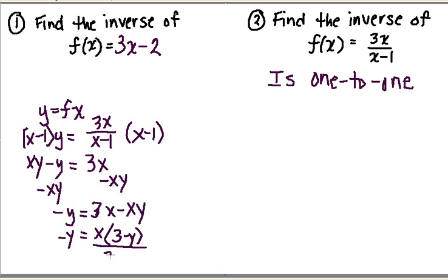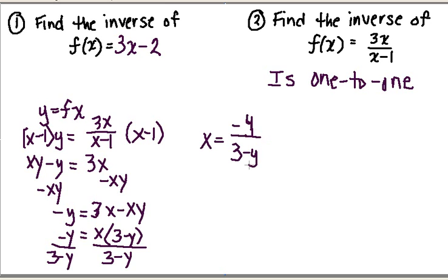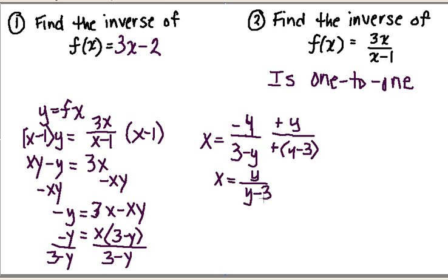And now for my last step, I'm just going to divide both sides by 3 minus y. I end up with x equal to minus y over 3 minus y. Now just to make my life easier, I'm going to factor out a negative 1 at the top and the bottom. That makes my y positive and my 3 negative, and the two negative 1s cancel to make a positive. So I end up with x equals y over y minus 3.